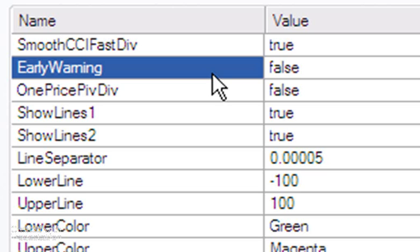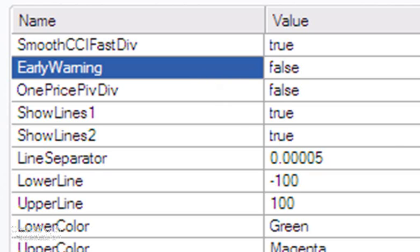And then EarlyWarning: most of the time the program waits till the end of a bar before drawing the lines just to confirm that the divergence has occurred. If this is set to true, what it will do is calculate within the bar, and so what you might see is lines appearing and then disappearing and then appearing as the bar forms. If by the end of the bar there isn't a divergence set up, then the line would disappear even though it had appeared during the formation of the bar.